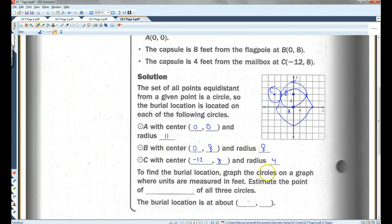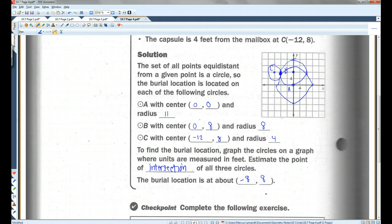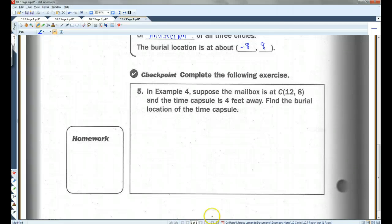To find the burial location, graph the circles on the graph, which we just did, where all the units are measured in feet. Estimate the point of intersection of all three circles. It's hard to tell. They actually intersect there at this point, which is (-8, 8). And you can do the last checkpoint. That's all.